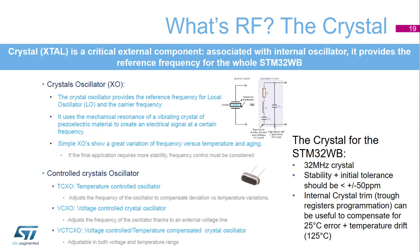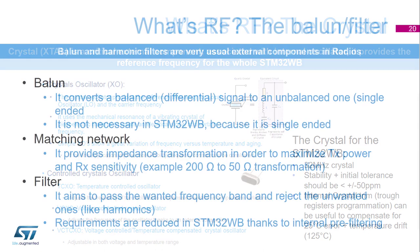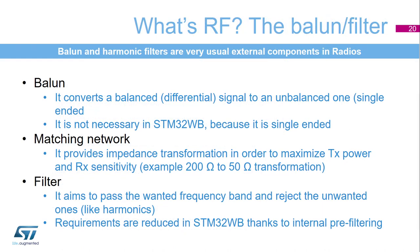For the STM32WB, a 32 MHz crystal is required. Its stability and initial tolerance should be better than ±50 ppm. Internal crystal trim through register programming can be useful to compensate for temperature error and drift.